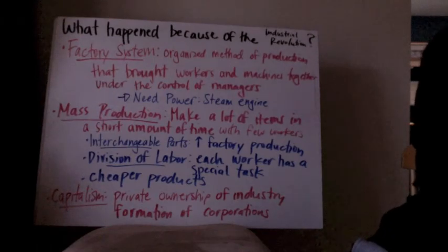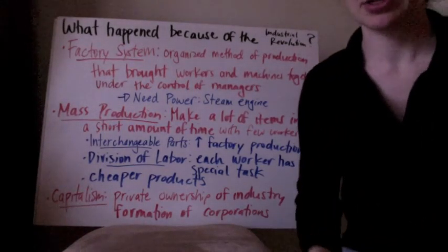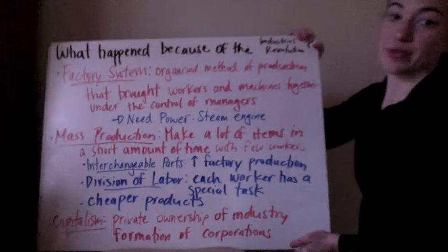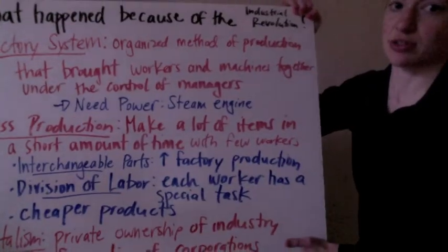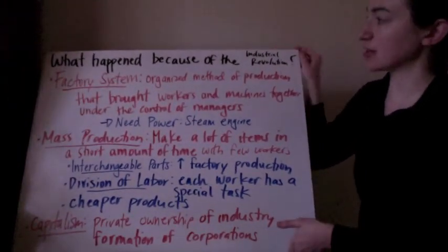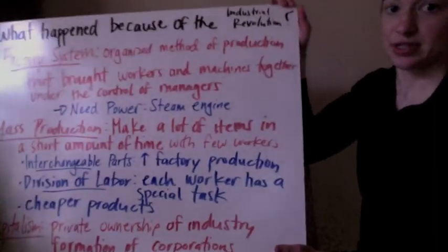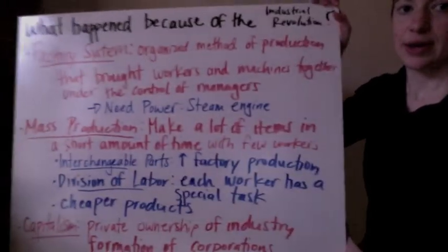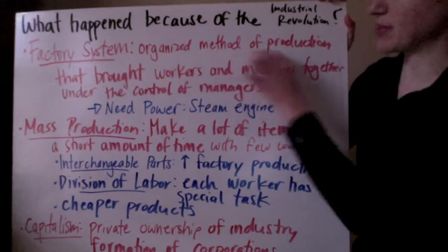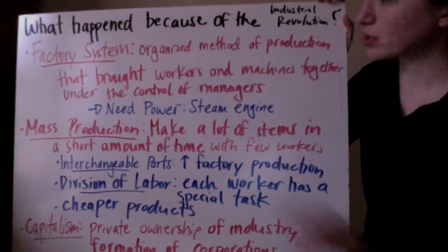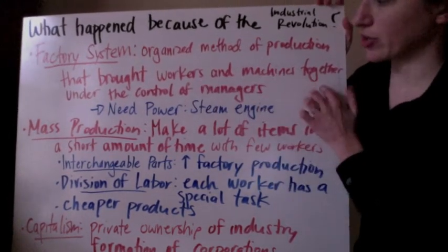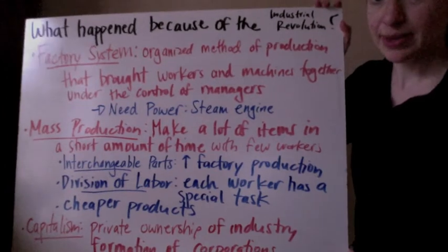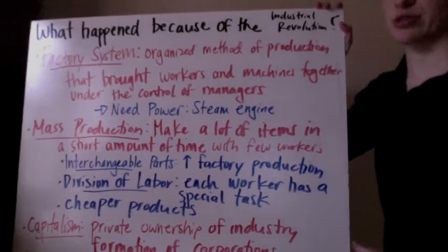So what happened because of this revolution? It's not a political revolution — there wasn't a new government in place. But a lot of things that still exist today are there because of the Industrial Revolution. The first thing still around today is the factory system: an organized method of production that brought workers and machines together, controlled by managers. There were workers to make the stuff, machines to make it on, and managers to make sure those things happened.